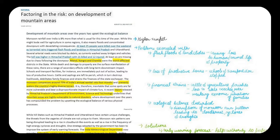As stated in the editorial, development of mountain areas over the years has upset the ecological balance. When you construct roads, buildings, or towers, you have to cut down trees. As trees are cut, landslide problems arise, and in the long run the ecological balance is impacted. Animals are forced to go deeper inside forests, resulting in huge wildlife loss and related problems.